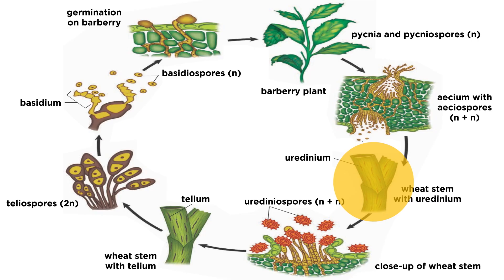We'll begin the life cycle during the summer months by focusing on the stem of its primary host, wheat. Hyphae have penetrated the wheat stem, and at the places where the red rust emerges, there are structures called uredia that are filled with urediniospores. The urediniospores allow for the rust to asexually reproduce and infect other plants. As the temperature gets colder and the fungus recognizes that winter is coming, the fungus forms a telium instead of a uredinium. The telium houses the production of teliospores, which are black, thick-walled, and diploid. These teliospores are quite durable and are stable until spring, when they germinate and transition from a diploid spore to a haploid spore through meiosis.